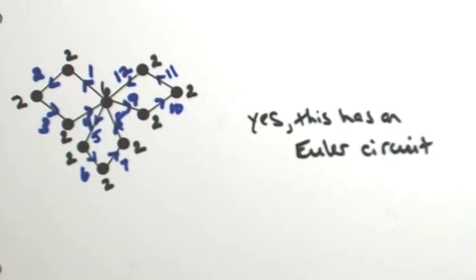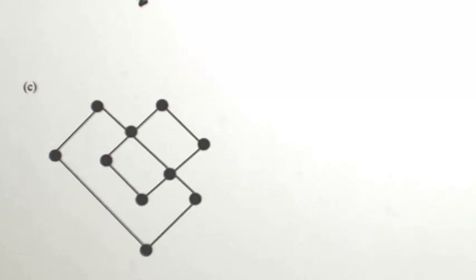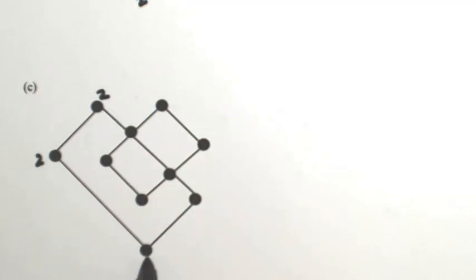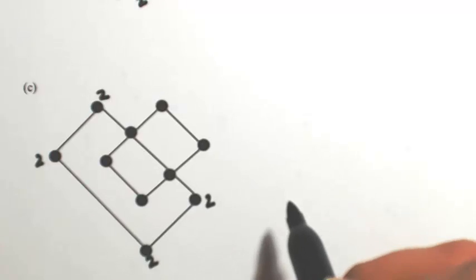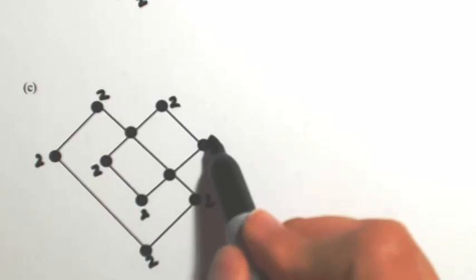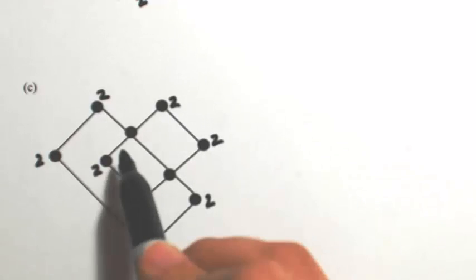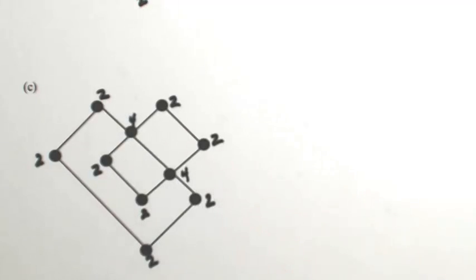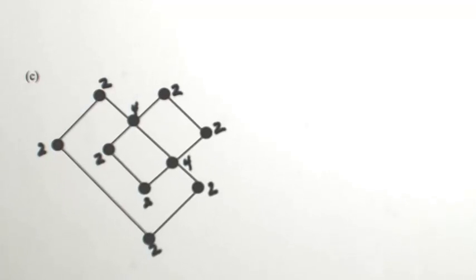Let's look at one more. Again, we need to determine if it will have an Euler circuit, and if it does, we'll find one. The first thing I'll do is look at all the degrees of all the vertices. Starting on the top left, we have two edges going in, and actually two all the way around that. On the inside we have two and two; on the outside we have two and two. On the inside we also have four and four. So all of the degrees are even, and this is guaranteed to have an Euler circuit because it is connected.